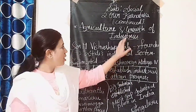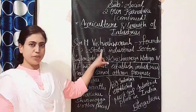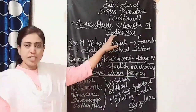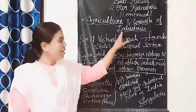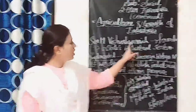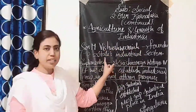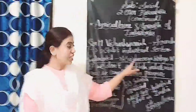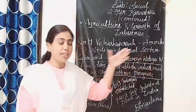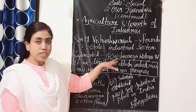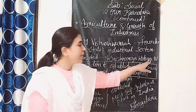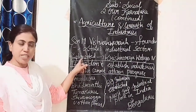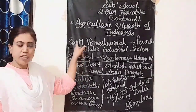Now, moving to the growth of industries. Sir M. Vishweshwarya is a very important person in the industrial sector of Karnataka. He is the founder of the state's industrial sector, and he implemented the industrial vision of Mysore king Krishna Raja Wadiyar IV.